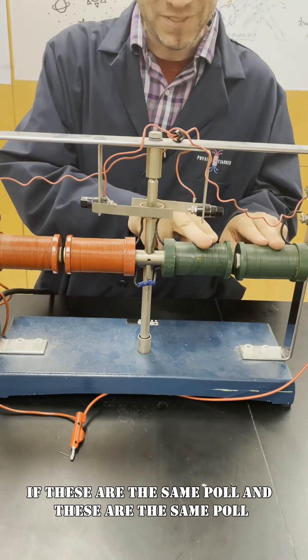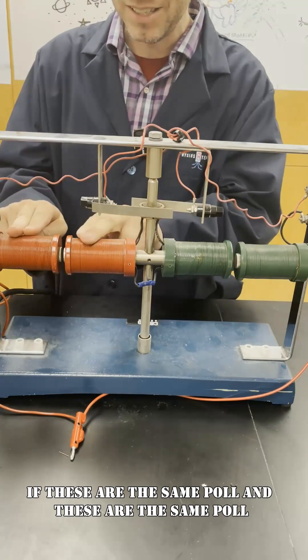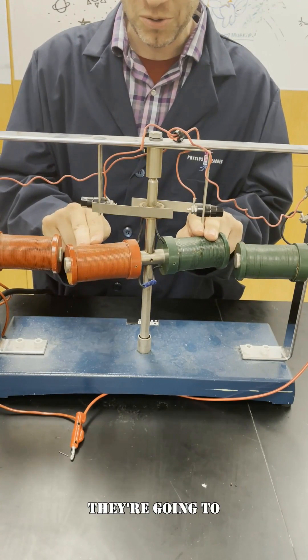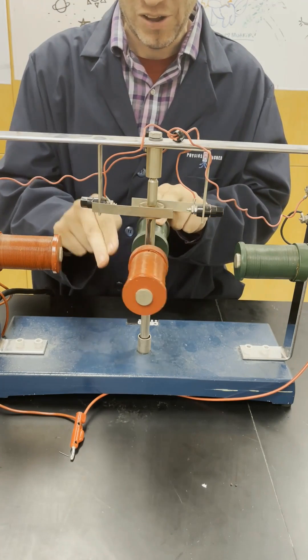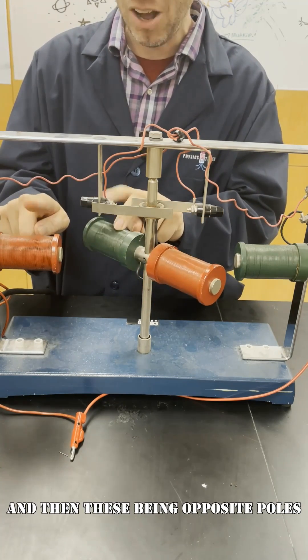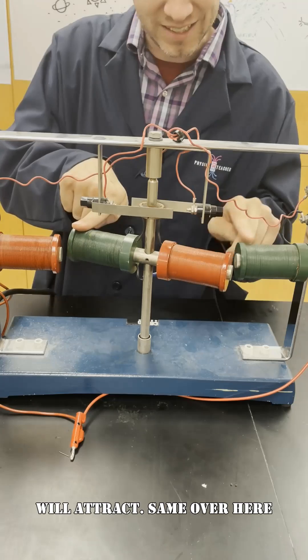Now initially if these are the same pole and these are the same pole they're going to repel and then these being opposite poles they'll attract same over here.